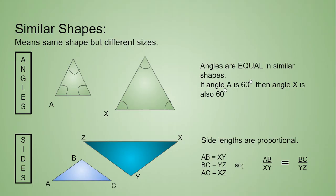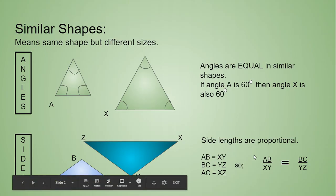So being able to use that information, you can set up a proportion to see if the side lengths are proportional to each other. Because remember, a proportion means that the ratios are equal. And that's what we're looking for in similar shapes. And so you would do a comparison of the sides. So we have AB is to XY, and then equal to BC is to YZ.